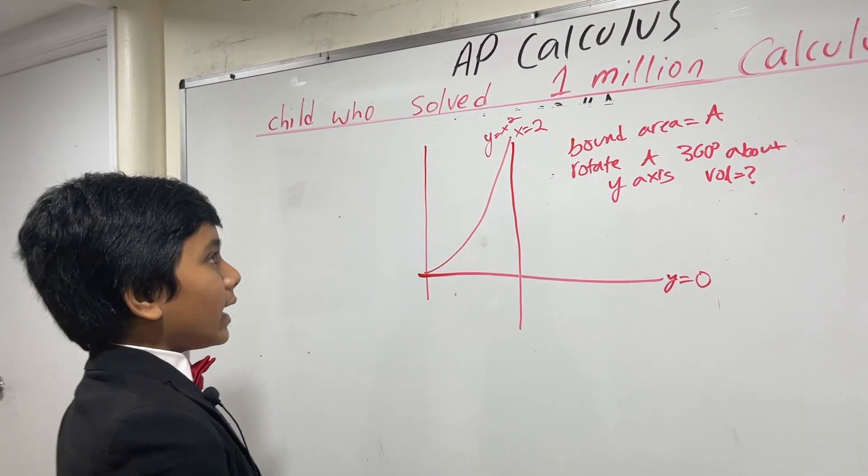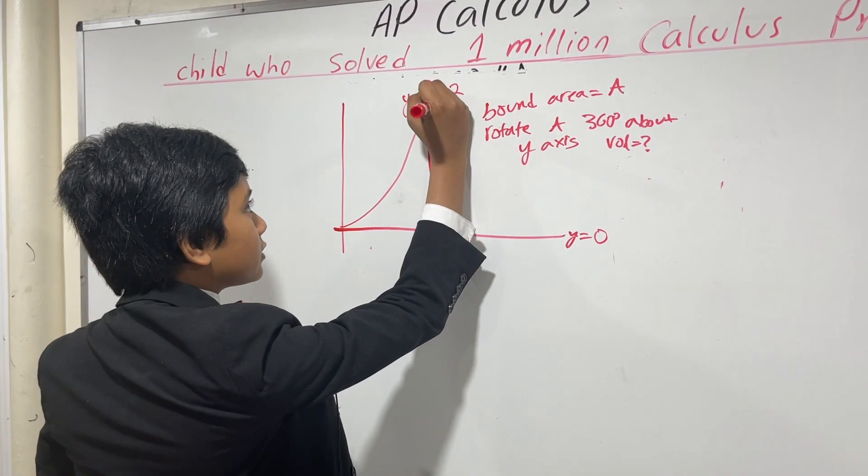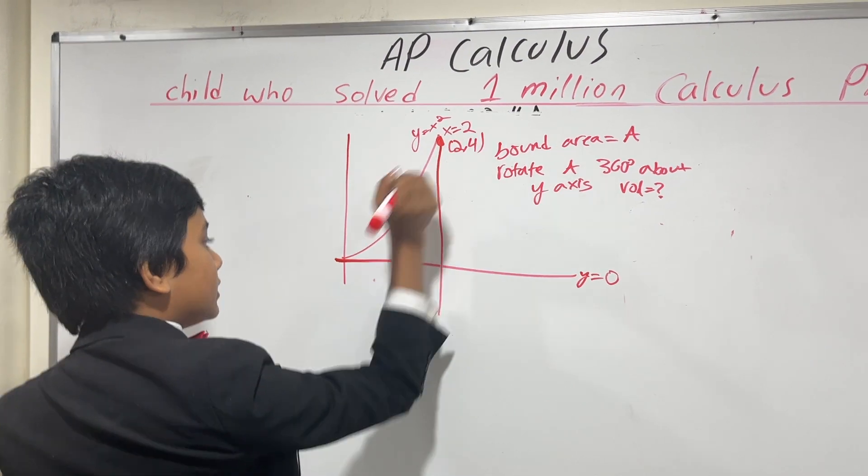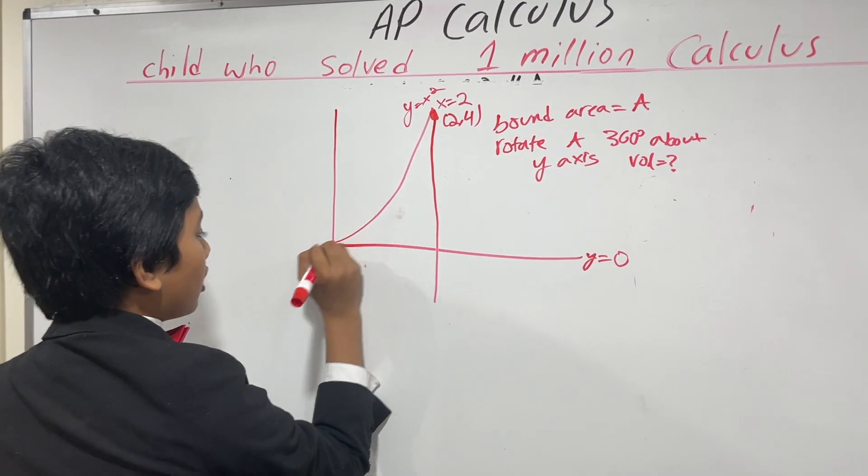Now, what is this point of intersection? It's (2, 4). What is this point?